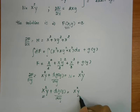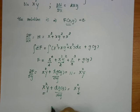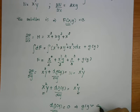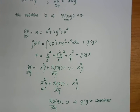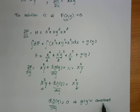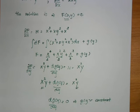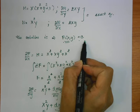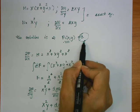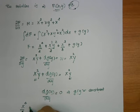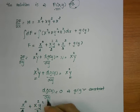This term and this term cancel out, so you get dg/dy equal to 0. That means g(y) is a constant. We don't need to write it down because in the final solution f equal to c, the constant will combine with c. So our f(x,y) is equal to x⁴/4 plus x²y²/2 plus x³/3 equal to c.